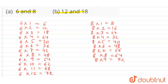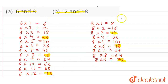Now let's check the common multiples. The first common multiple of 6 and 8 is 24, the second common multiple is 48, and the third common multiple is 72. So the first three common multiples of 6 and 8 are 24, 48, and 72.